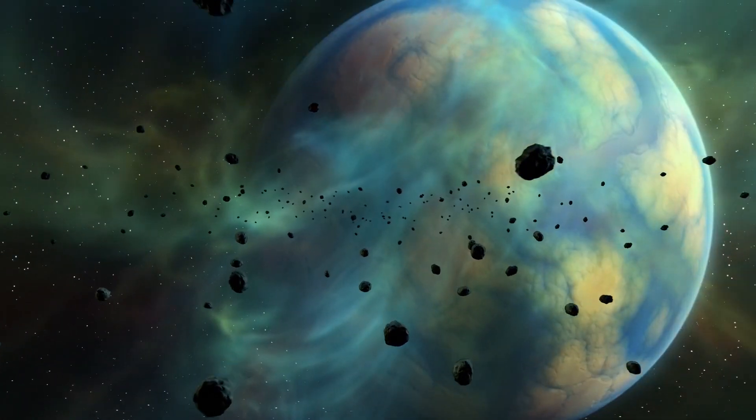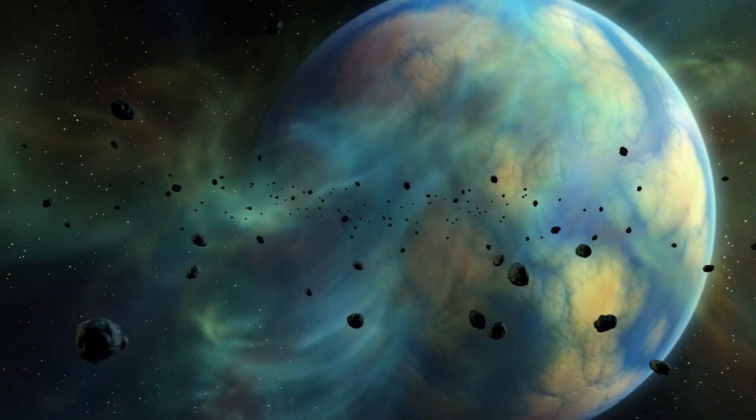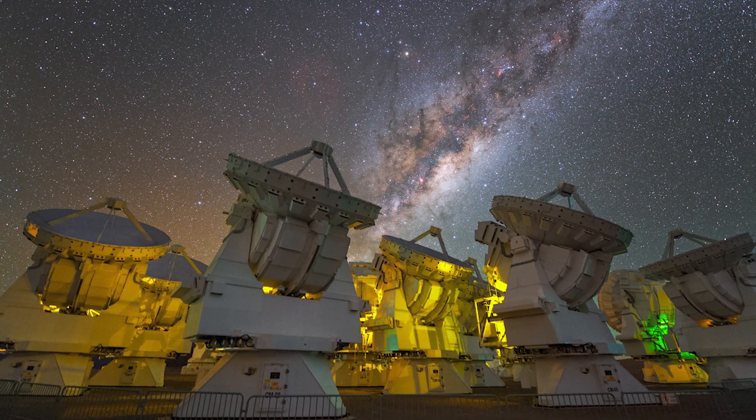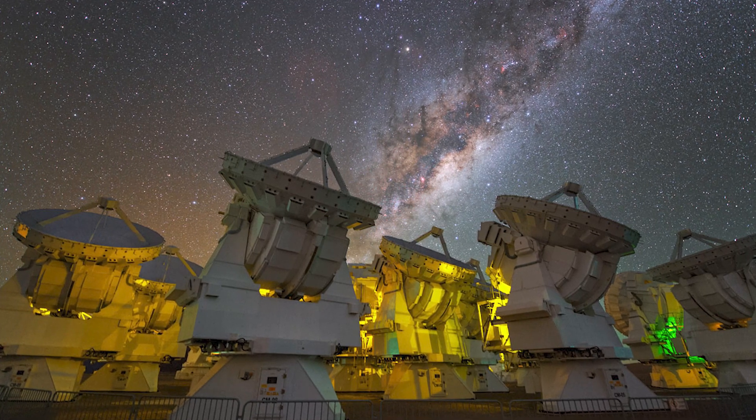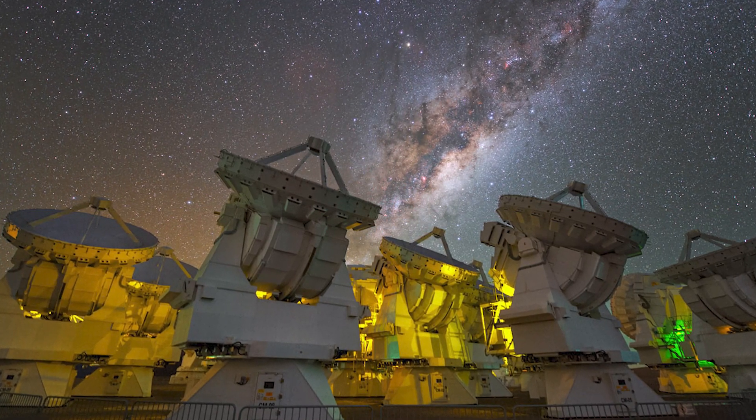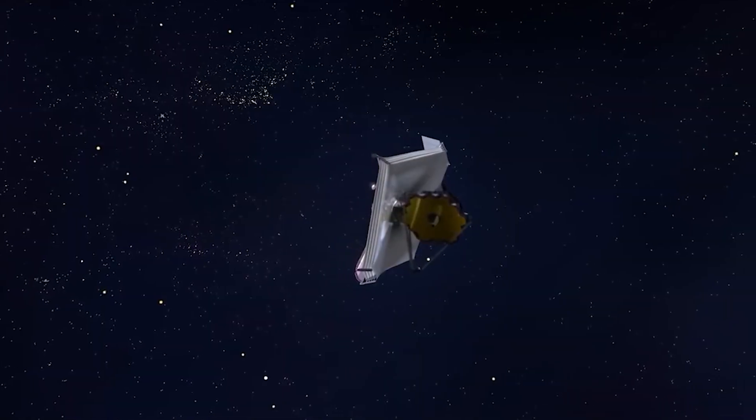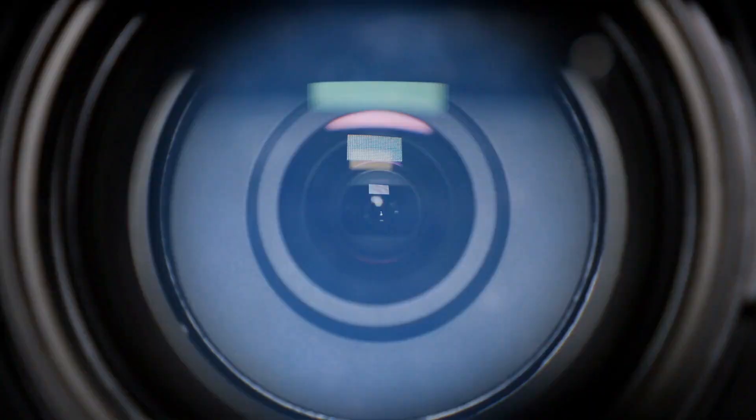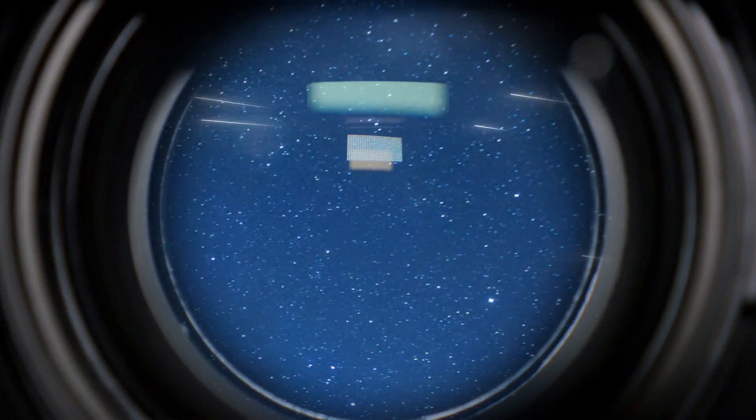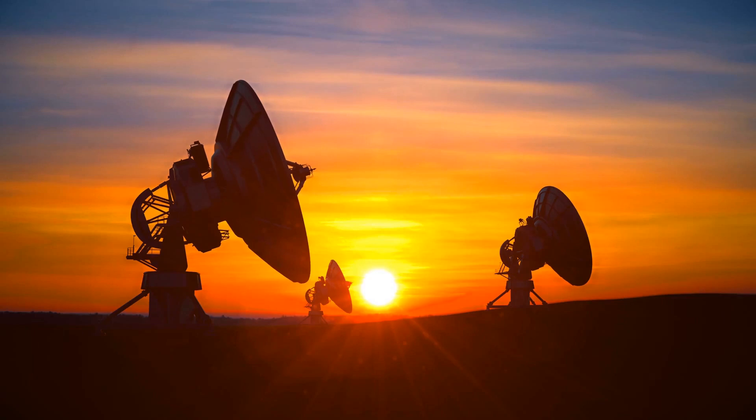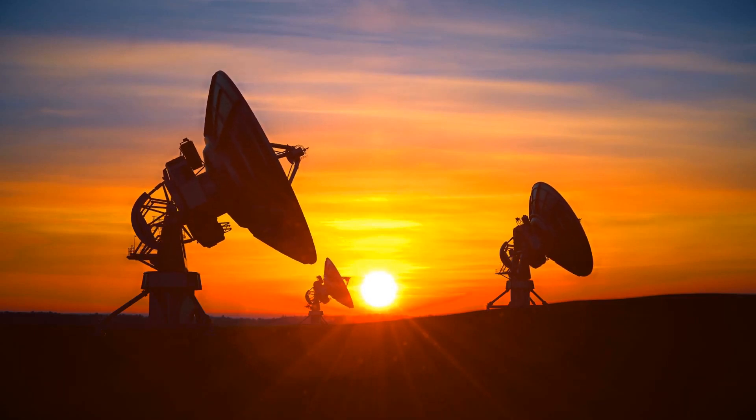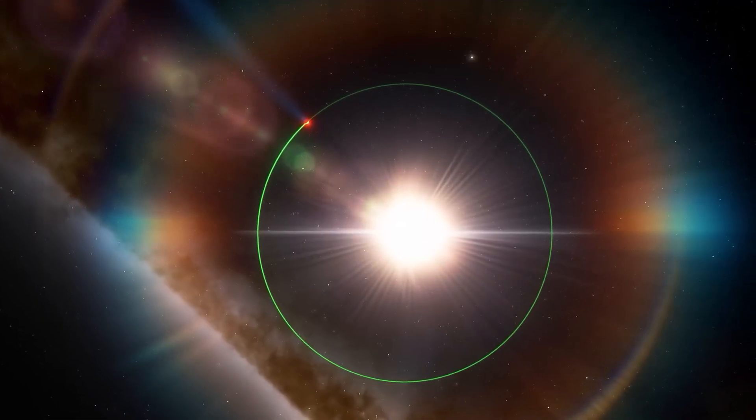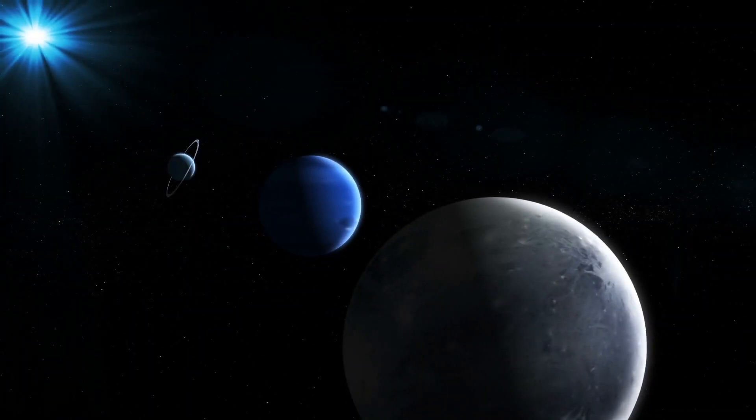The exoplanet HIP-65426b was first discovered in 2017 by astronomers who used the SPHERE instrument on the European Southern Observatory's telescope in Chile and captured images of the exoplanet using short infrared wavelengths of light. The James Webb telescope used longer infrared wavelengths and showed new details that ground-based telescopes could not have captured or detected due to the intrinsic infrared glow of Earth's atmosphere. The exoplanet was captured glowing hot after its formation.